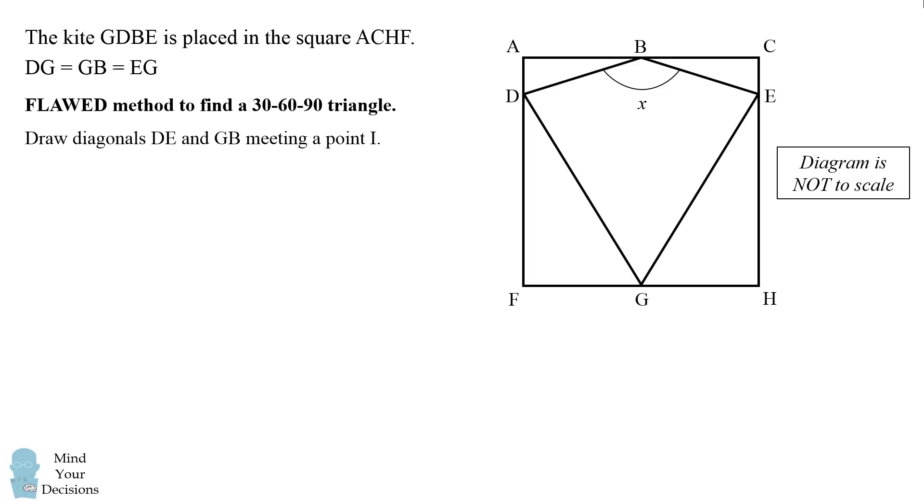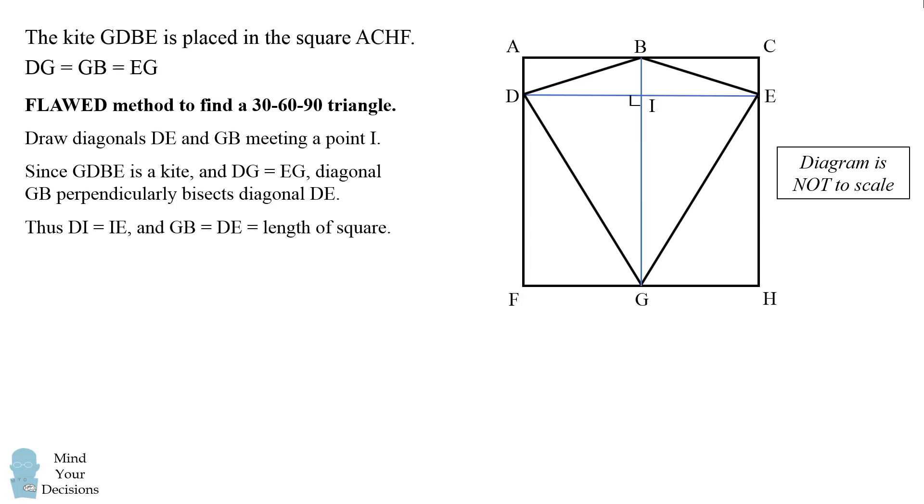So I got started by drawing the diagonals of the kite DE and GB and letting them meet at point I. Since GDPE is a kite and DG equals EG, diagonal GB perpendicularly bisects diagonal DE. Thus DI = IE, and GB = DE = length of square.